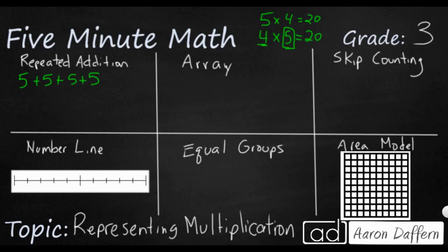So you can do five plus five plus five plus five, which gets you 5, 10, 15, 20. Or if you wanted to add five groups of four, you can say four plus four plus four plus four plus four. You'd have to make sure you add four five times, but both are going to get you 20.